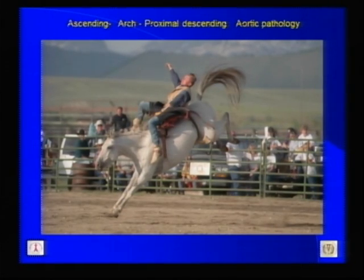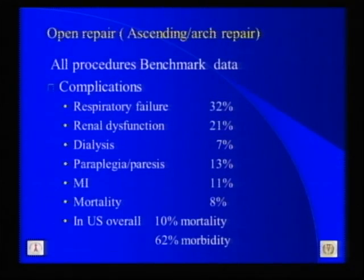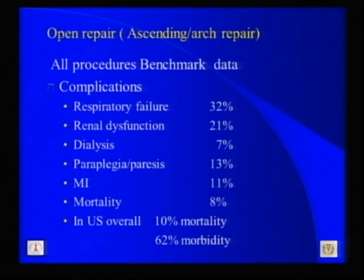As you all know, ascending and proximal descending aortic pathology can be quite challenging. The treatment goals include to repair the pathology itself by minimizing organ ischemia of the parts at risk. In the United States, open procedures continue to be the benchmark we compare against. The overall morbidity associated with open repair is estimated to be 62%, and a mortality overall of 10% across the country.